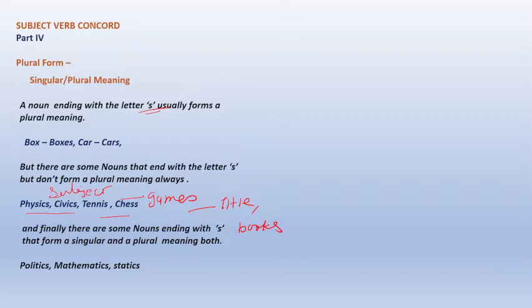Then sometimes name of titles and books as well. And finally there are some nouns ending with 's' that form a singular and plural meaning both. So there are some nouns that end with 's' they take singular meaning also and plural meaning also. That is why plural form is a part of group noun. But not all the words are included in group noun because the formation of some words are like that they seem like they are plural in form but they are not actually plural. So we can't count those words in group nouns.